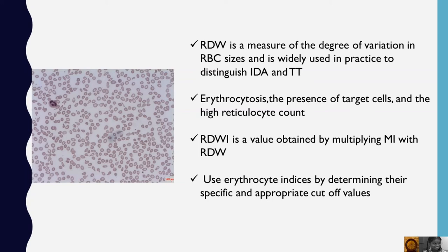Erythrocytosis, presence of target cells, and a higher reticulocyte count are features of thalassemia trait. The RDW index is a value obtained by multiplying the Mentzer index with RDW. Use erythrocyte indices by determining their specific and appropriate cut-off values.